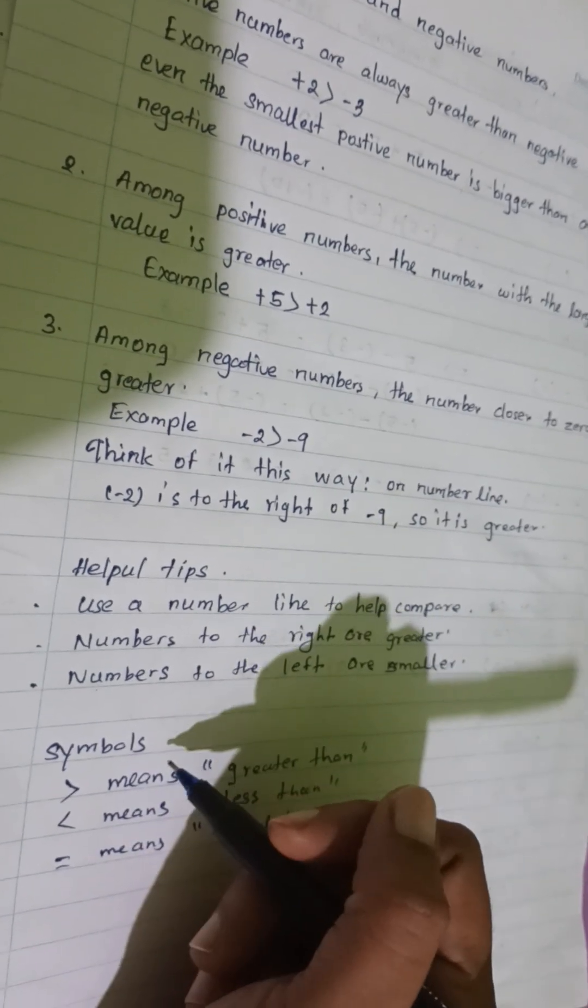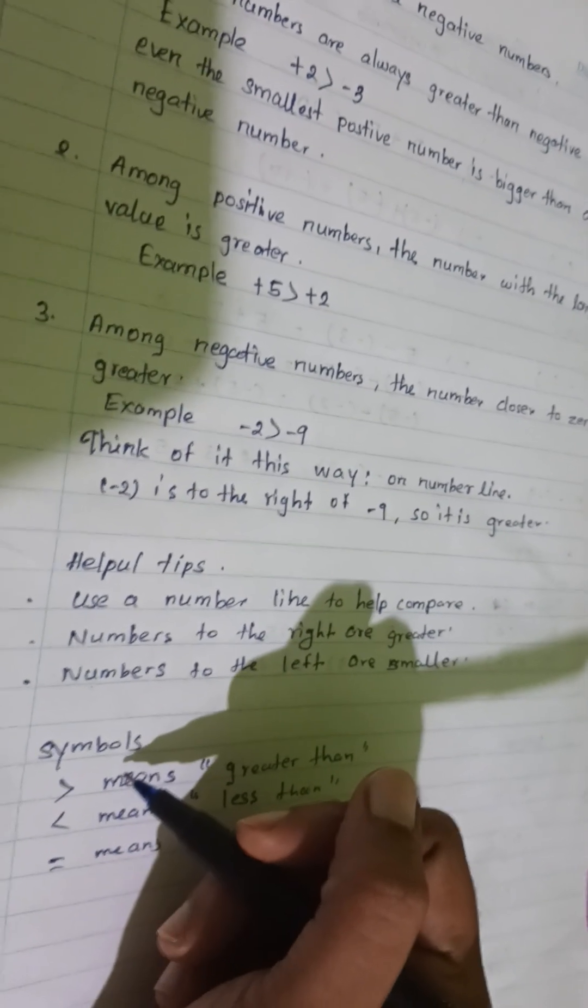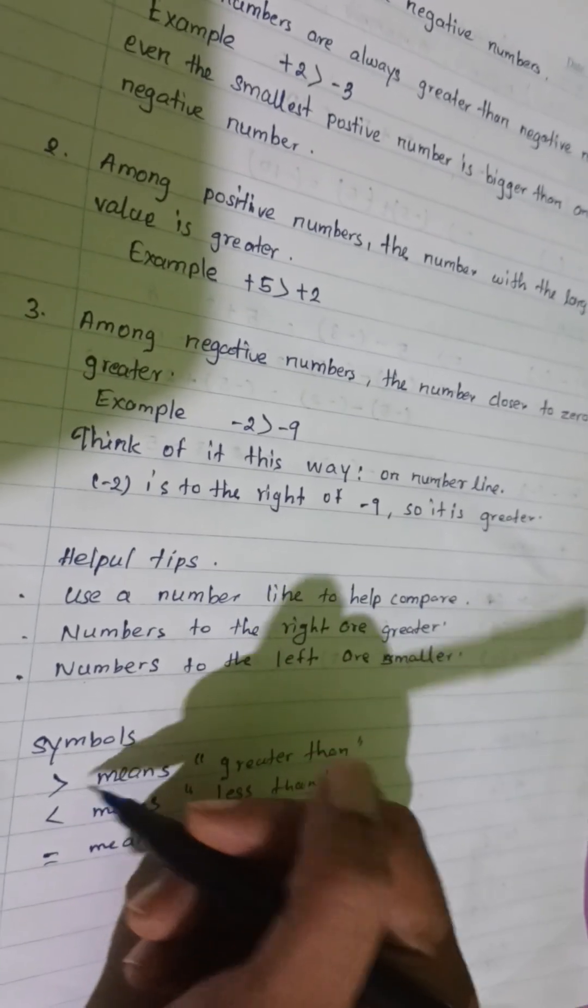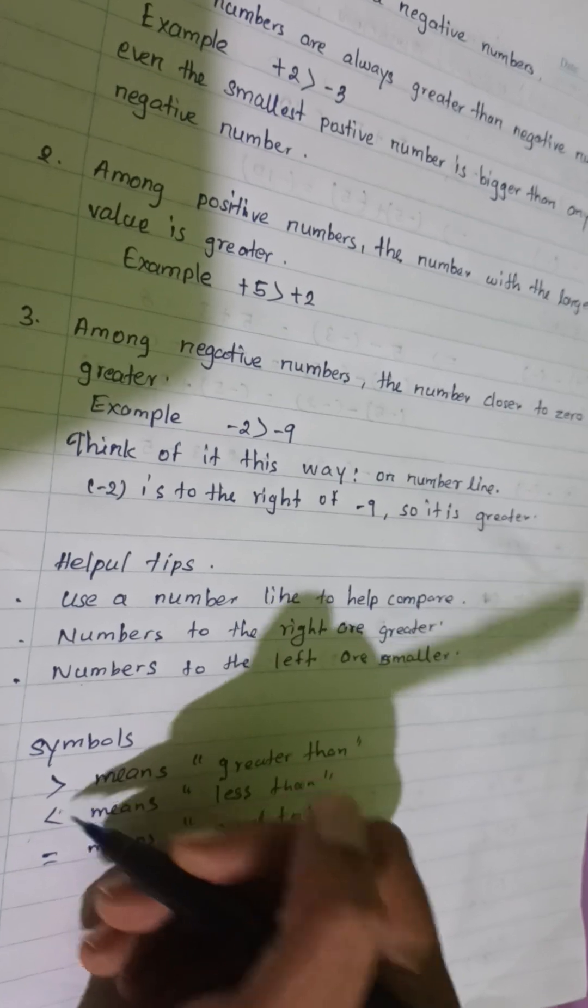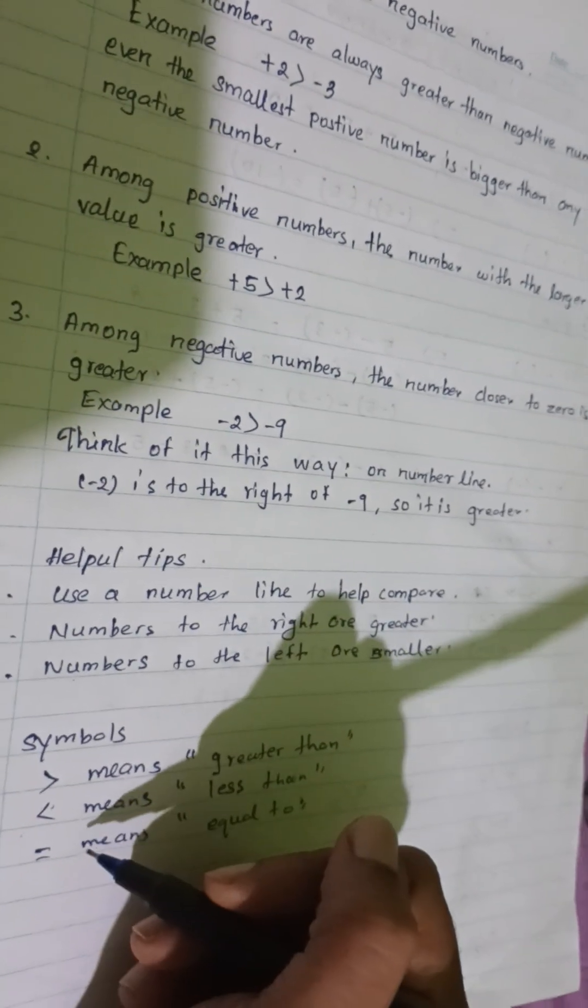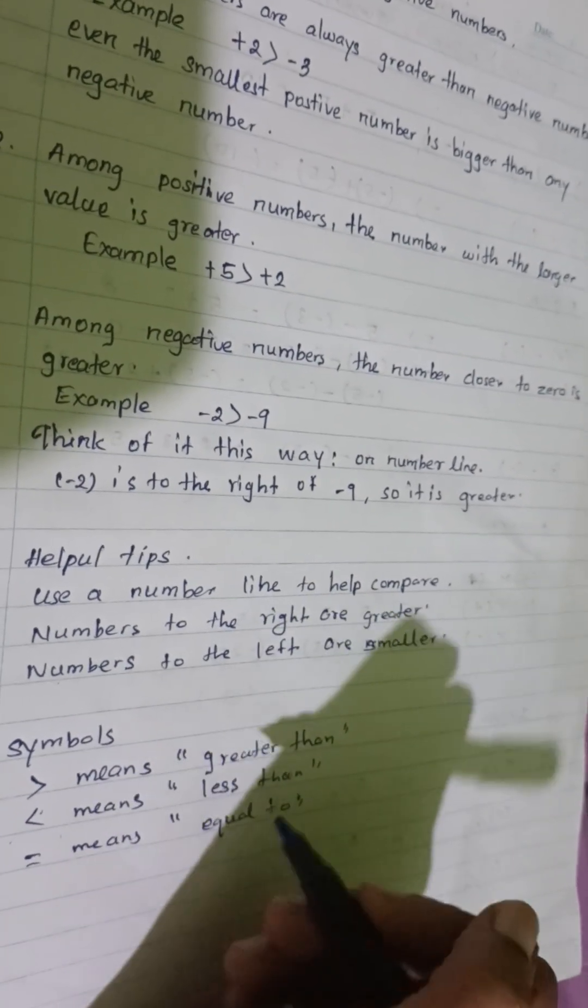Some symbols are there. This means greater than. This symbol is less than. This symbol is equal to.